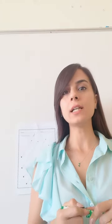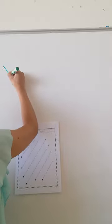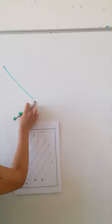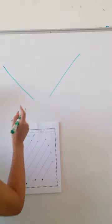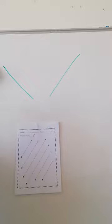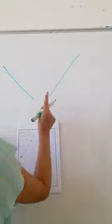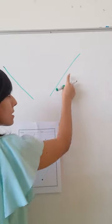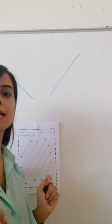Together we are going to learn the diagonal line. A diagonal line is a straight line. It can either start from the top left to the bottom, or from the top right to the bottom. These two lines are diagonal lines.